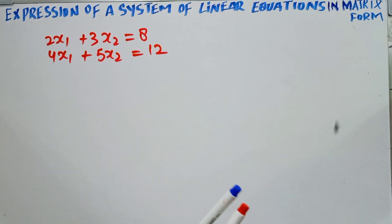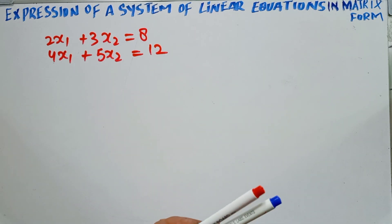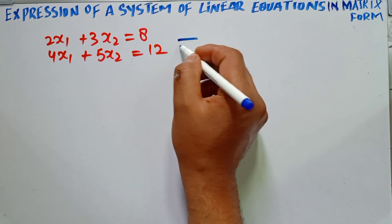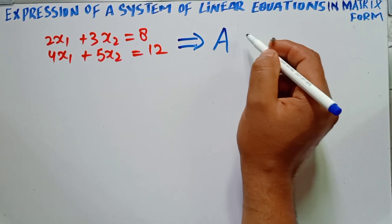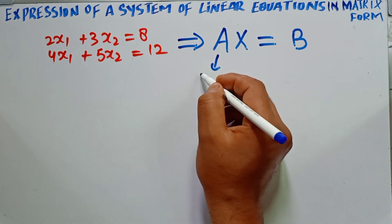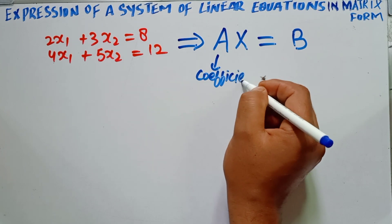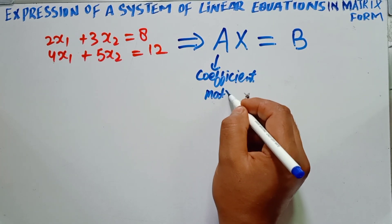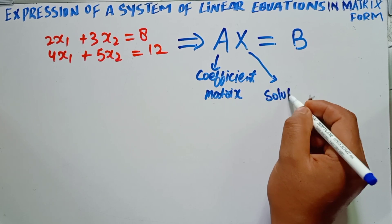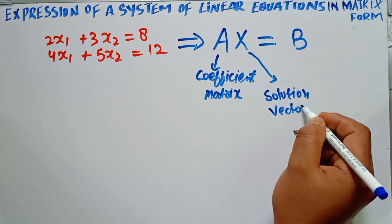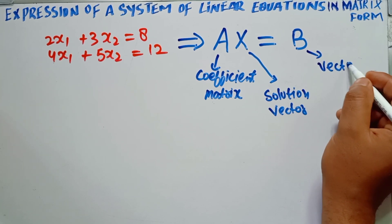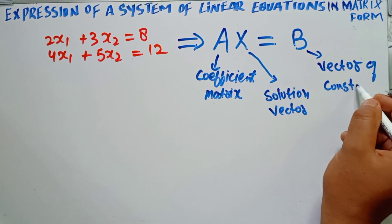Now these are the system of linear equations. This system of linear equations can be expressed in matrix form — it can be converted into the form A X is equal to B. Here A is the coefficient matrix, X is the solution vector, and B is the vector of constant terms.